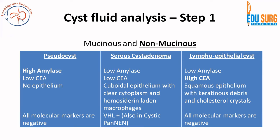In step one - mucinous versus non-mucinous - how can cyst fluid analysis help you in understanding this? We have already seen the imaging features. The three most common non-mucinous neoplastic or non-neoplastic lesions that you will see - pseudocyst is the most common non-epithelial and non-neoplastic lesion when it comes to pancreatic cysts.